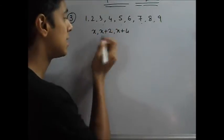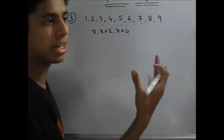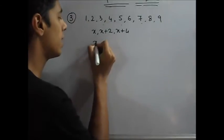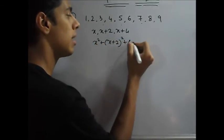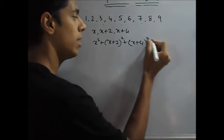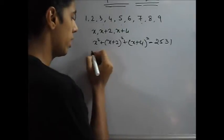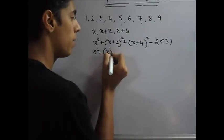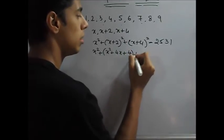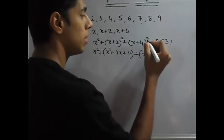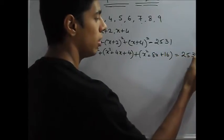Now given that the sum of the squares of consecutive odd numbers is 2531. So now x square plus x plus 2 square plus x plus 4 square is equal to 2531. Now x square plus x square plus 4x plus 4 plus x square plus 8x plus 16 is equal to 2531.